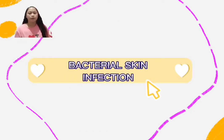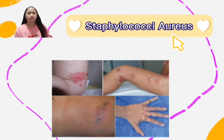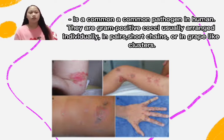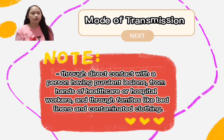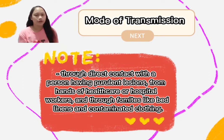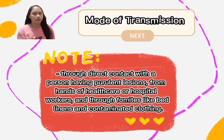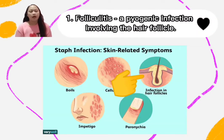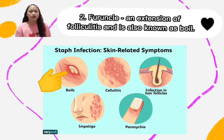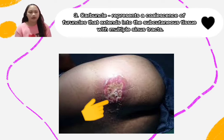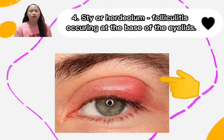Good day, I'm Katherine. I will discuss bacterial skin infection. Staphylococcus aureus is a common pathogen in humans. They are gram-positive cocci, usually arranged individually, in pairs, short chains, or grape-like clusters. The mode of transmission is through direct contact with a person having wound conditions, from hands of healthcare or hospital workers, and through fomites like bed linens and contaminated clothing. Clinical findings include: folliculitis, a pyogenic infection involving the hair follicle; furuncle, an extension of folliculitis also known as a boil; carbuncle, a coalescence of furuncles extending into subcutaneous tissue with multiple sinus tracts; and stye or hordeolum, folliculitis occurring at the base of the eyelids.